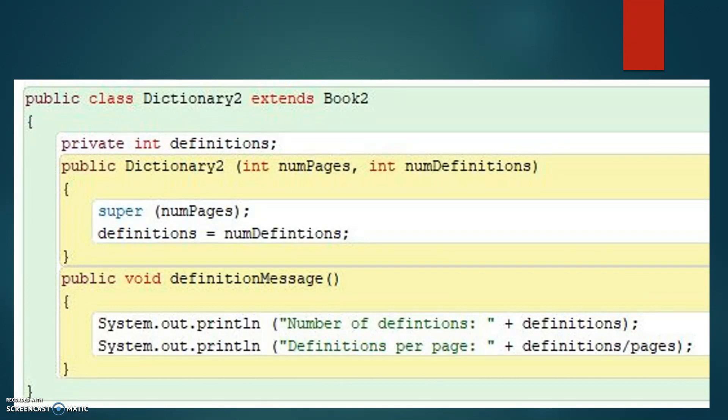Dictionary2, shown on the screen, represents a dictionary, which is a book. It is used to demonstrate the use of the super reference.